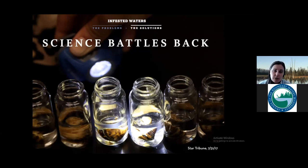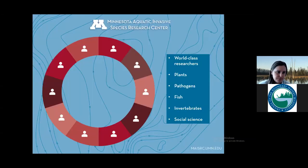Back in 2012, leaders from the U of M, the legislature, the DNR, and nonprofits came together to create a first-of-its-kind research center focused solely on AIS. That year, the legislature appropriated funds to create what is now the Minnesota Aquatic Invasive Species Research Center, or MAISRC. MAISRC was formed to strengthen our state's capacity for solving AIS problems and to do so in a collaborative, coordinated, and stable manner that allows for long-term research needs to be addressed.